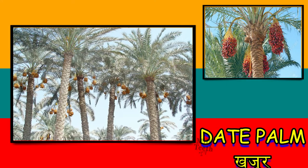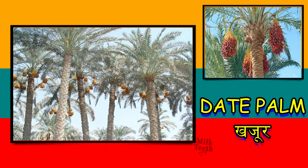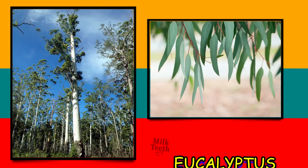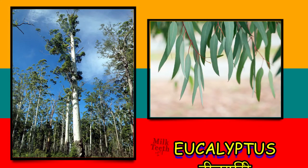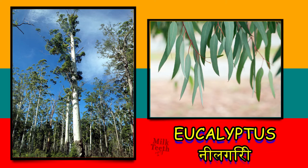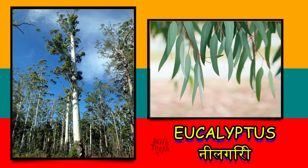The date palm tree. Hindi mein kehte hain isse khajur ka pedo. Eucalyptus tree. Isse hindi mein kehte hain nilgiri ka pedo. Yeh bahut uccha pedo hota hai. Iska jo bark hota hai voh bahut khubsurat silver color ka hota hai.